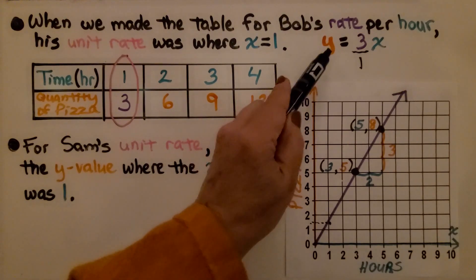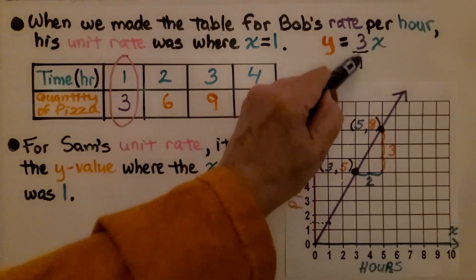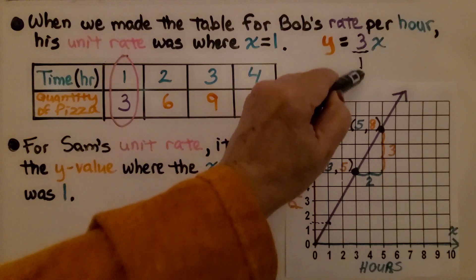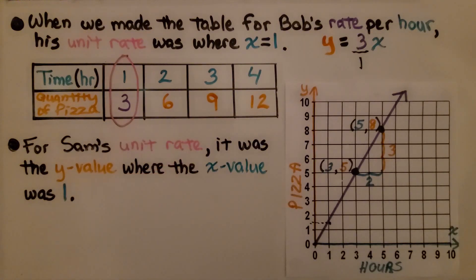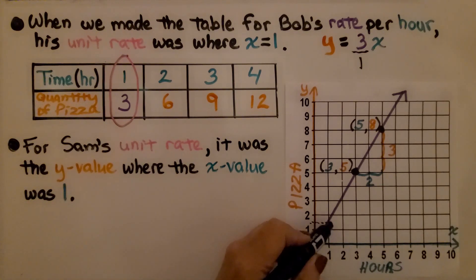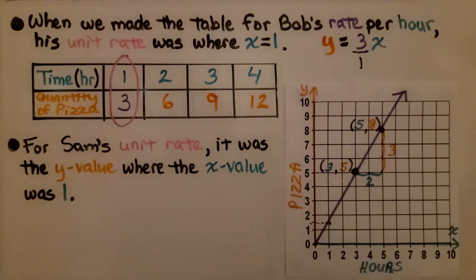This means we can actually look at this equation and tell what the slope is, because that spot is where m would be. m is the slope and we can just look at this graph and see where 1 is to find the unit rate. It's where y equals 1 and a half.